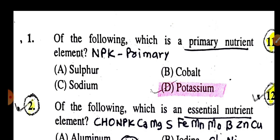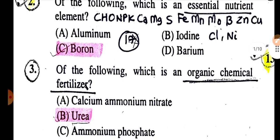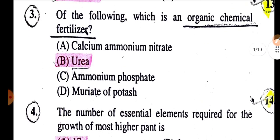Of the following, which is primary nutrient element is potassium. NPK is a primary nutrient element. Of the following, which is an essential element is boron. Total are 17 essential elements: CHO, NPK, CNGS, FE, MN, MO, boron, zinc, copper, chloride and nickel.